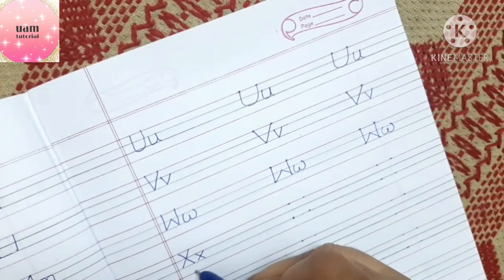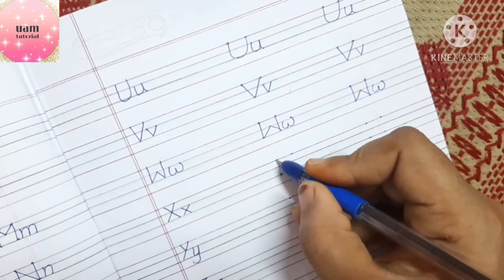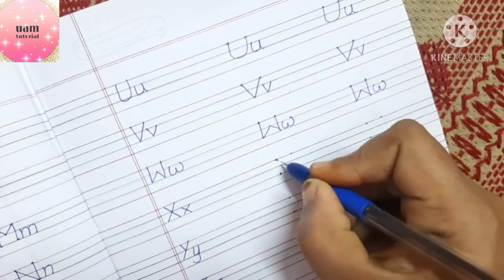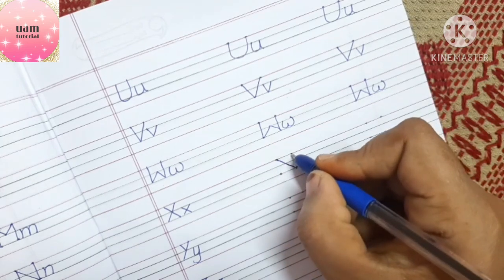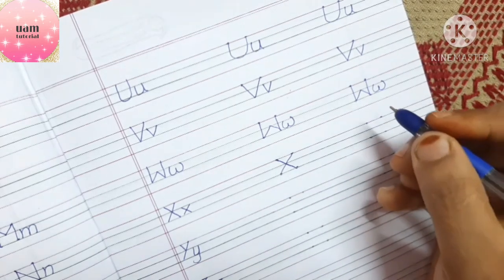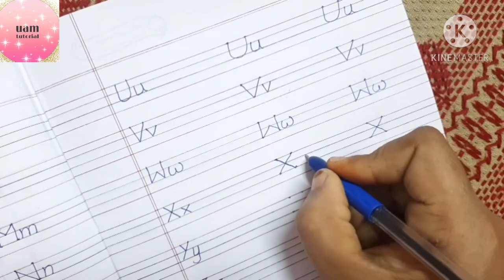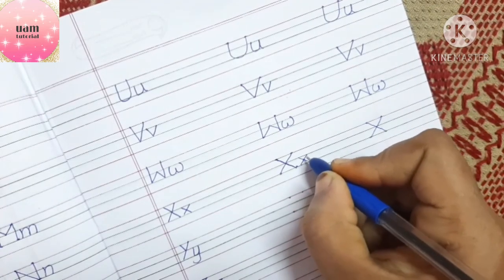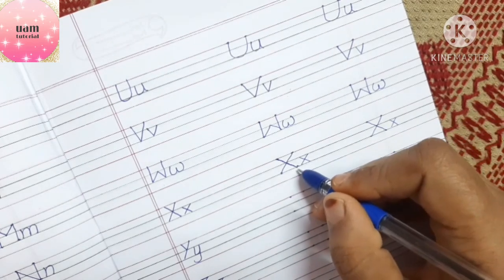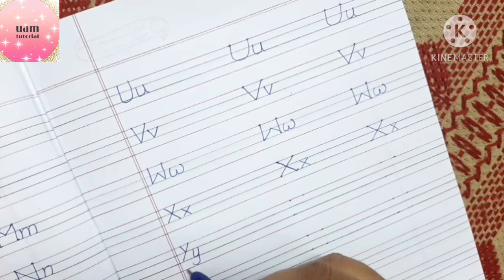Now the letter X. For capital X: write a left slant line from first to third line, then a right slant line from first to third line crossing over it. For small x: same as capital X but written between the second and third line. Words starting with X: x-ray, xylophone.